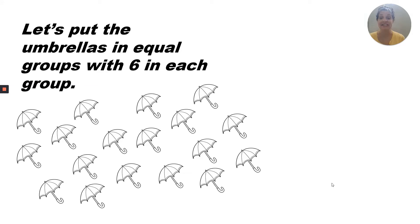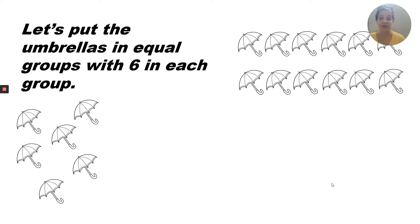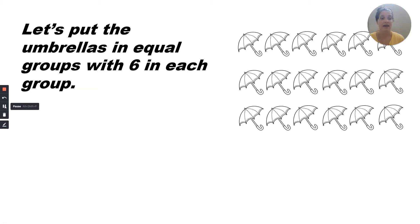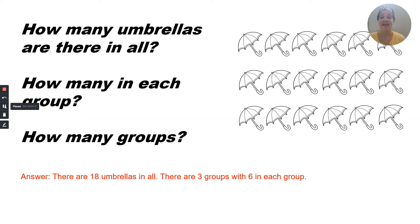Let's put these umbrellas in equal groups with six in each group. Here's one group, or one row, of six. There's a second group of six. And there's our third row with six umbrellas. There are 18 umbrellas in all. There are three groups with six in each group.